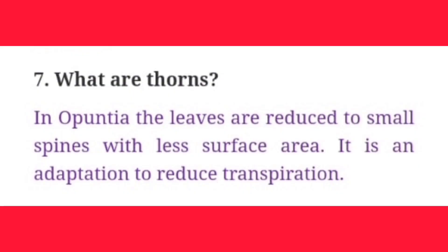Seventh question: What are thorns? Answer: In Opuntia, the leaves are reduced to small spines with less surface area. It is an adaptation to reduce transpiration.